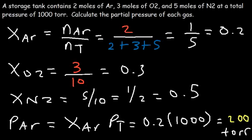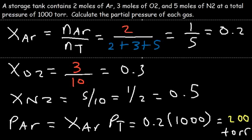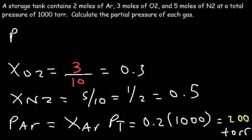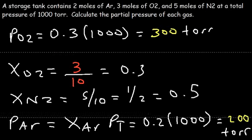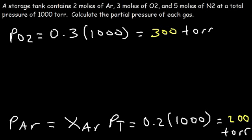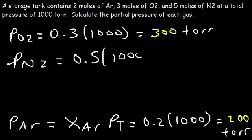The partial pressure of O2 is the mole fraction of O2, which is 0.3, times the total pressure of 1000, giving 300 torr. The partial pressure of N2 is the mole fraction 0.5 times the total pressure, which gives 500 torr.